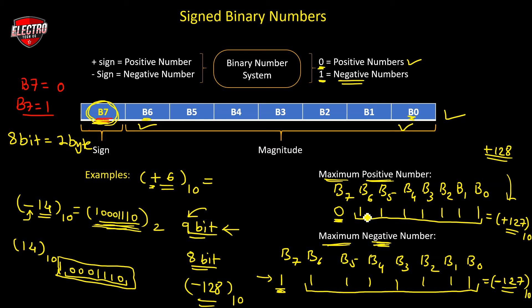Signed numbers are used in arithmetic operations on digital devices. In the next video, we will discuss arithmetic operations like addition and subtraction in the binary, octal, and hexadecimal number systems.